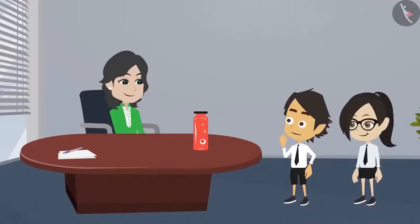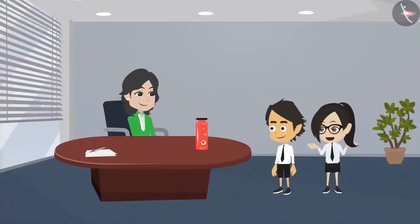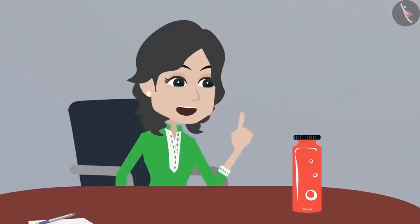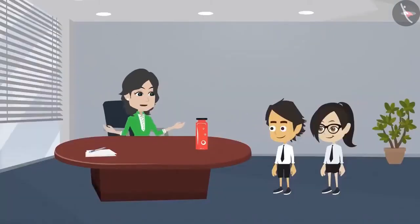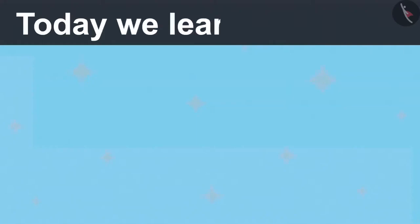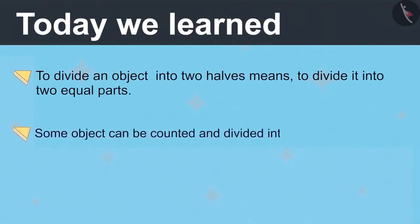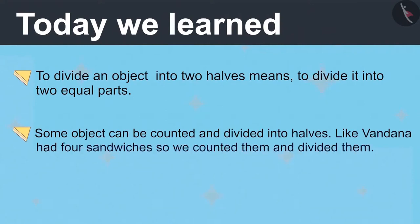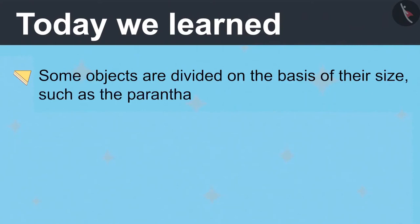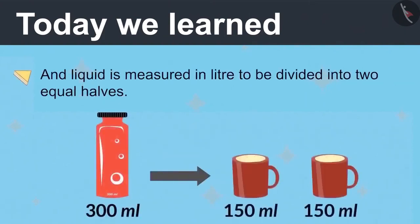Now we have learned to divide all types of objects into halves. Not yet — both objects cannot be divided into two equal halves. Tomorrow I will show you objects you haven't learned to divide. Today we learned that to divide an object into two halves means to divide it into two equal parts. Some objects can be counted and divided into halves. Some objects are divided on the basis of their size, such as the paratha. And liquid is measured in litre or millilitre to be divided into two equal halves.